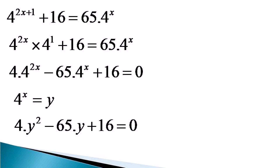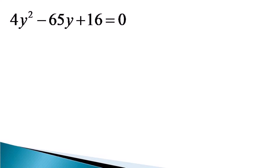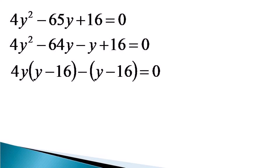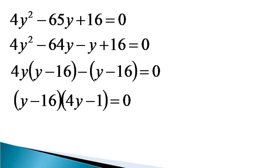Let us see how we proceed with the quadratic equation 4y squared minus 65y plus 16 is equal to 0. We start factoring it and write the left hand side as 4y squared minus 64y minus y plus 16 is equal to 0. We take 4y common from the first two terms, giving 4y into y minus 16, and represent the next two terms as minus y minus 16 is equal to 0. Taking y minus 16 common again, we get the equation: y minus 16 into 4y minus 1 is equal to 0.